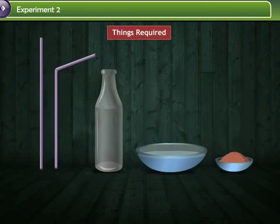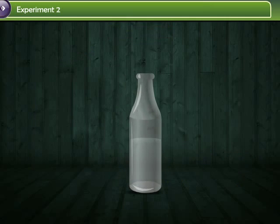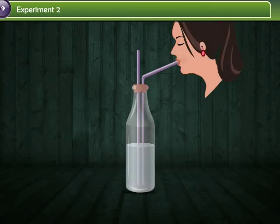To perform this experiment, you will require two straws, a glass soda bottle, some water and some clay. Fill half the soda bottle with water. Put two straws in the bottle so that the ends are under the surface of the water. Seal the mouth of the bottle with clay to prevent air from entering inside. Next, try to sip some water through one straw with the second one left open.